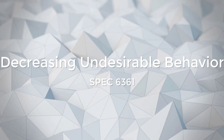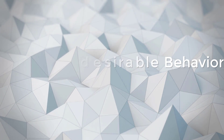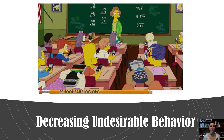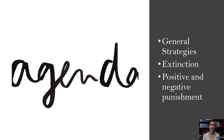Hello guys. In this lecture we're going to be talking about some classroom behavior management strategies that you can use to decrease undesirable behavior. So if you have a kid that's engaging in an inappropriate behavior and it's occurring too often, these are strategies you can employ to decrease that undesirable behavior. We're going to talk about some general strategies, then extinction, and then wrap it up with positive and negative punishment.